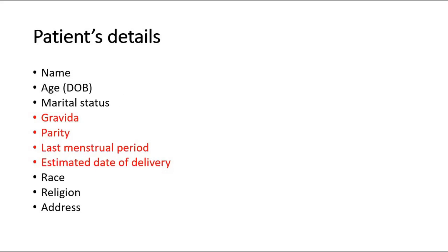First, the patient's details — we have to know the name of the patient and their age, the marital status, whether they are married or not, and gravida and parity. Gravida is the total number of pregnancies regardless of how they ended before this pregnancy, whereas parity is the number of live births at any gestation or stillbirth after 24 weeks.